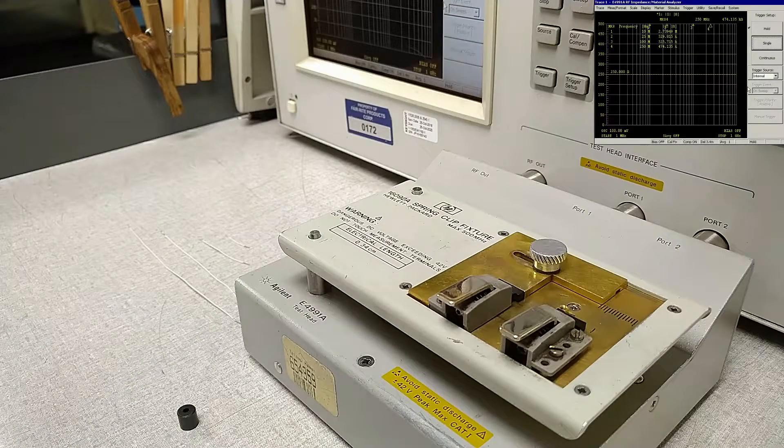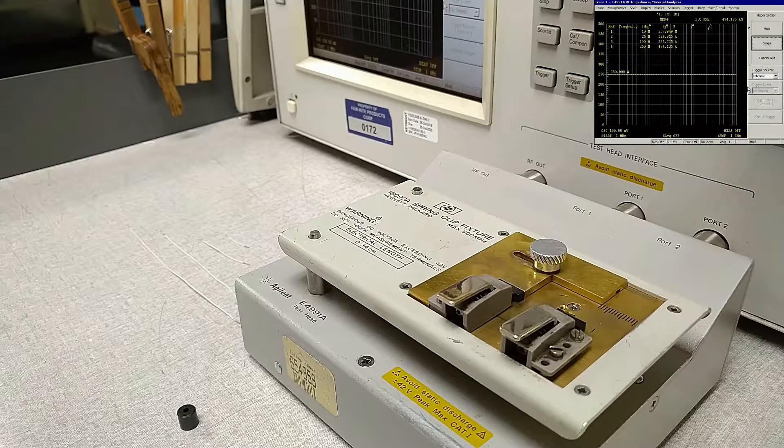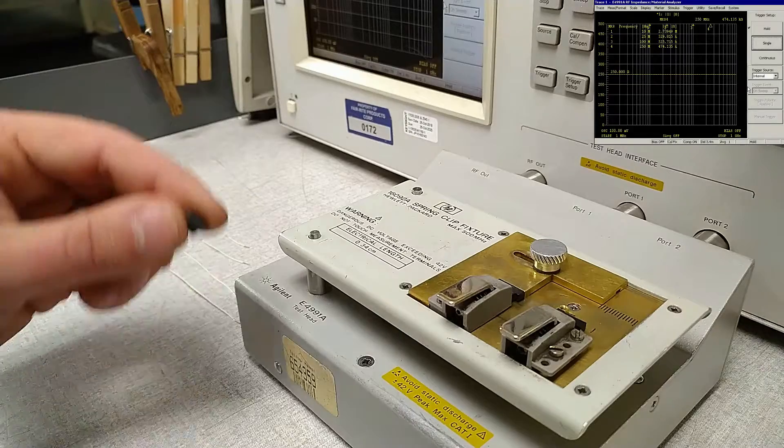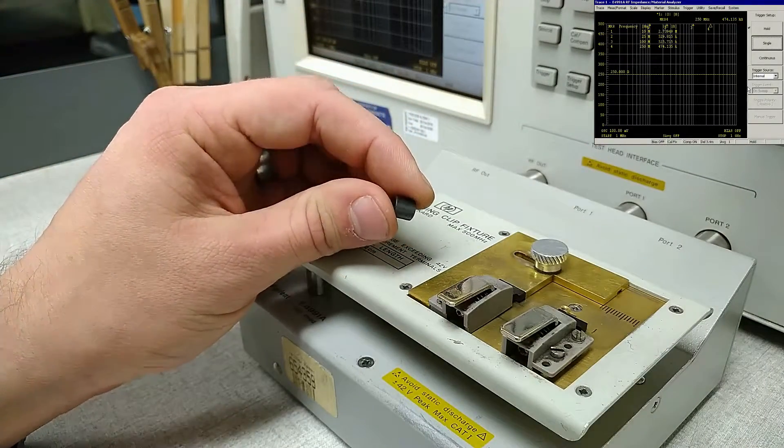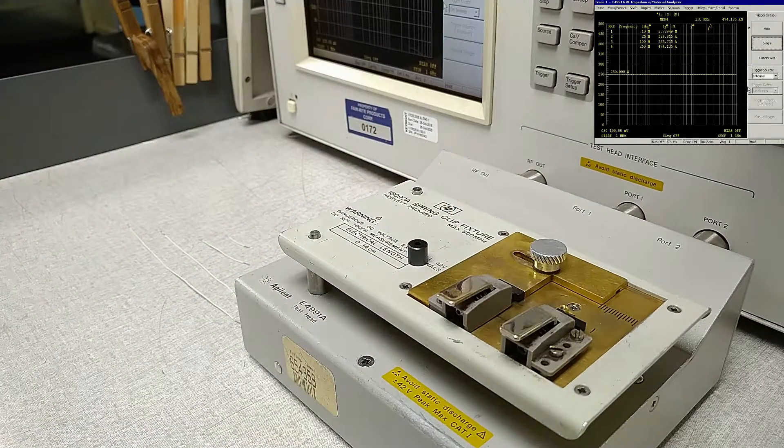This is Michael Larisim, Electrical Lab Team Leader at Ferrite Products Corp. This is going to be a video illustrating the effect that test lead length has on the rated impedance values of a ferrite suppression device.